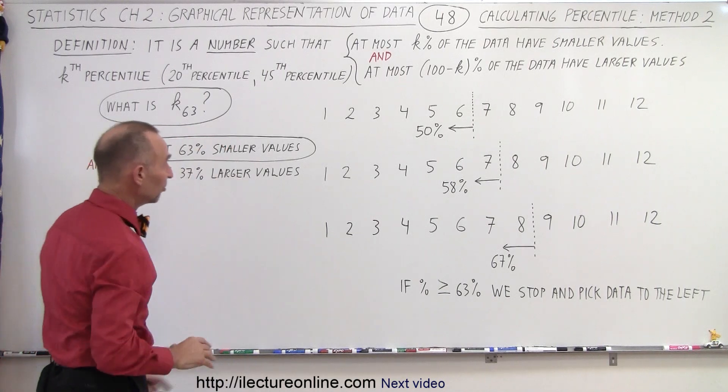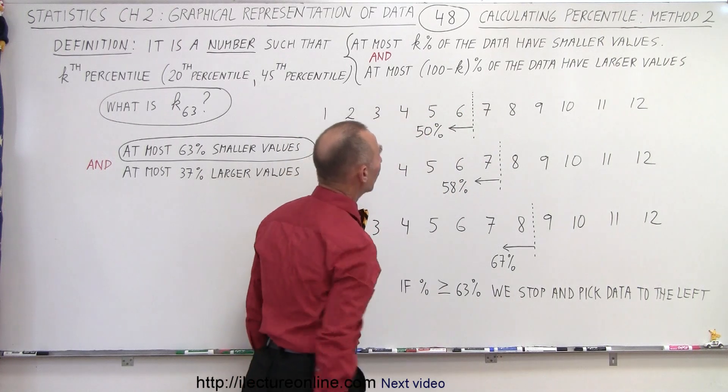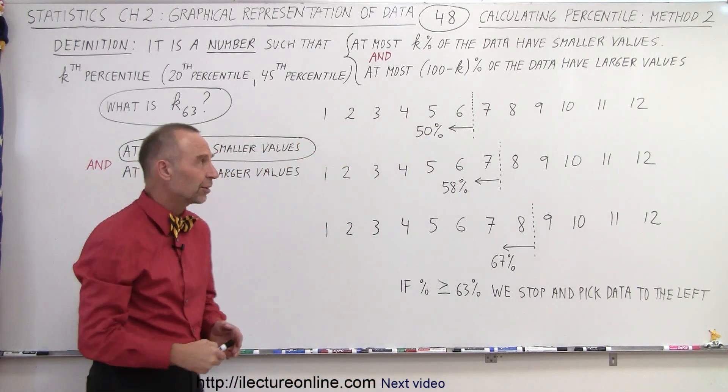Again, we use the same definition, which is still true, that at most k percent of the data have smaller values, and at most 100 minus k percent of the data have larger values.